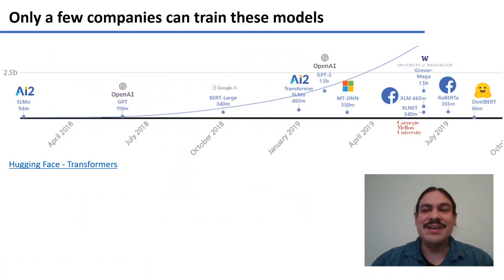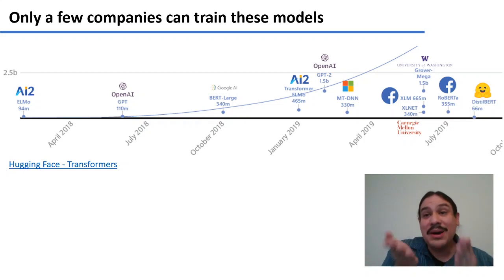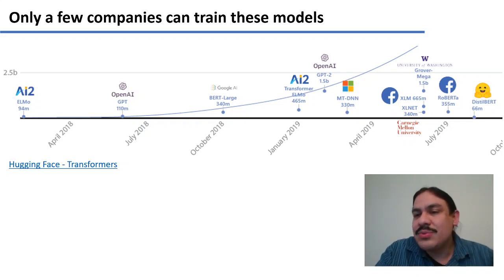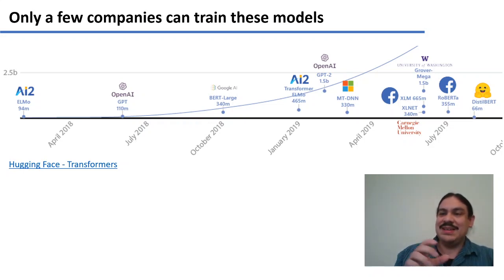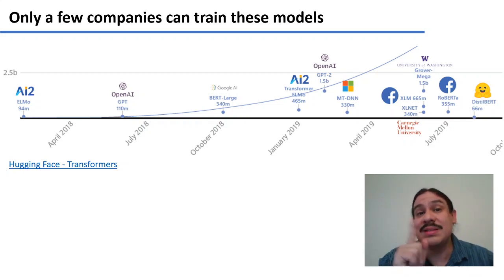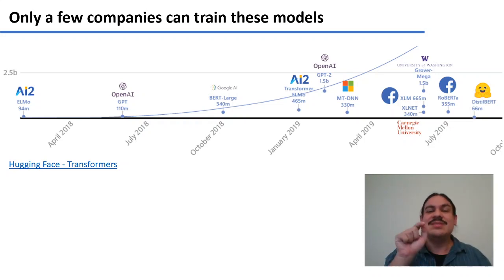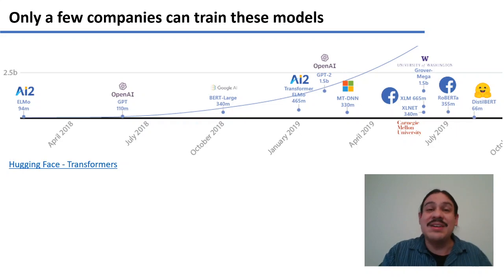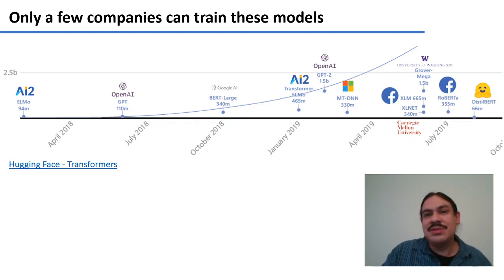And this brings us to one final problem: because they are so large, only very few companies can train and make them. Facebook has RoBERTa, Hugging Face has DistilBERT — a smaller version of BERT — Microsoft had a 17-billion-parameter model, there's one from Google, and only one that's academic, from the University of Washington. What this means is that if you, as a programmer, want to make one of these, you're going to have to be working for someone that has a computer big enough to make them. And this will affect who controls these models and what they're going to be used for.